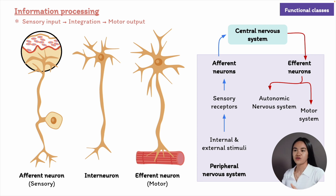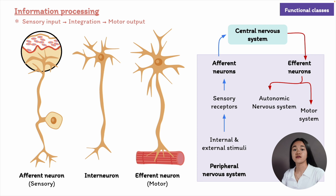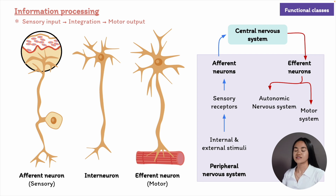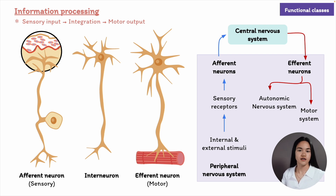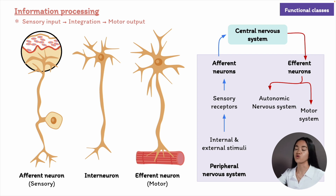Afferent neurons carry sensory information from the outside environment to the brain. The sensation of touch, pain, and temperature are all examples of sensory information, along with other senses like vision, hearing, smell, or taste. Generally, afferent neurons are connected to specialized sensory receptors grouped according to the stimuli they're triggered by. When sensory receptors detect an external stimulus — for example, touching a very hot cup of coffee — the afferent neurons send information about the stimulus up the spinal cord to the brain, where interneurons decide how to respond.